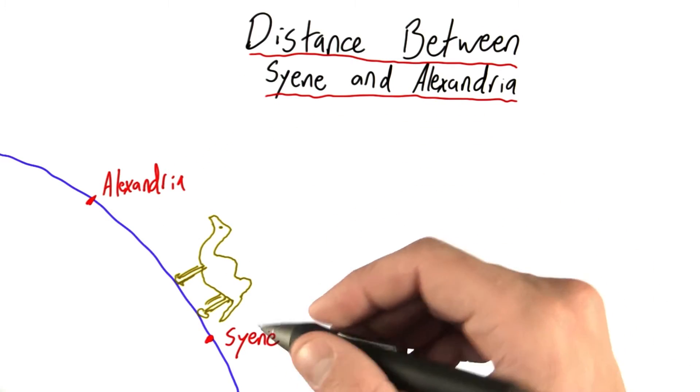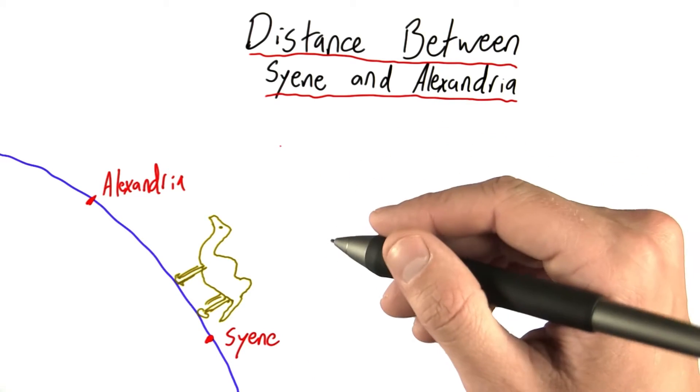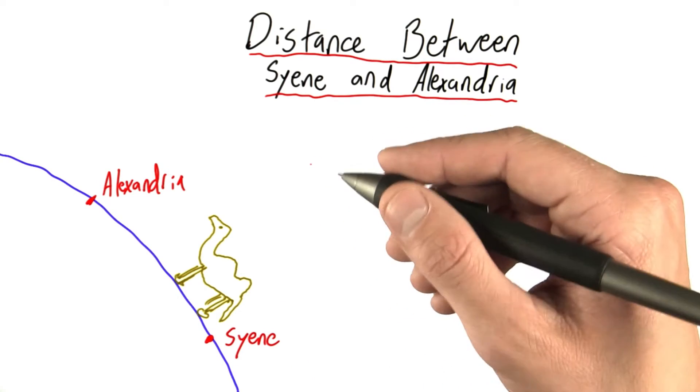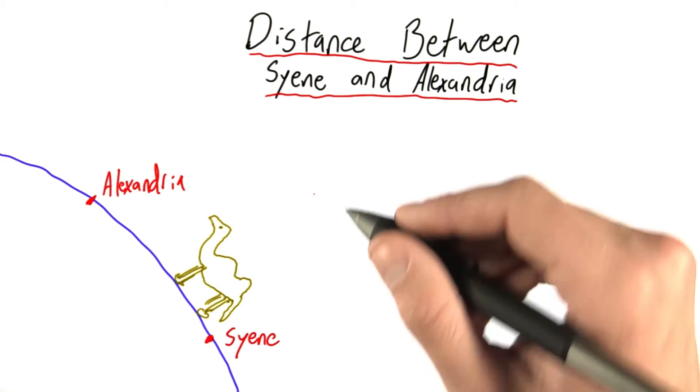Now, you can probably tell this is not the best way to measure distance. Maybe his camel walked in a perfectly straight line at constant speed, and the measurement went perfectly. But somehow, I doubt that.